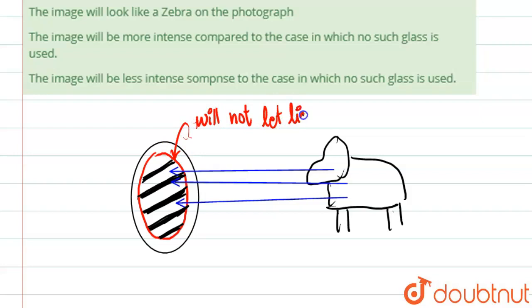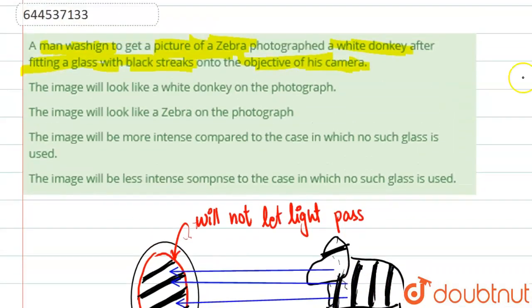That means after the filter, the donkey will look like a zebra. Why? Because basically due to the stripes in the image, this part of its body will not let light pass through it. So basically this will look striped, that means the donkey will look like a zebra.